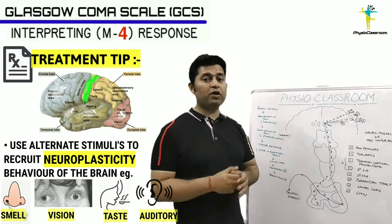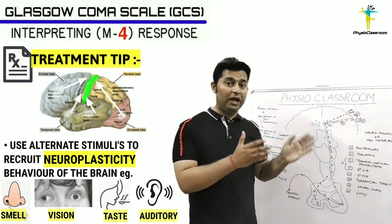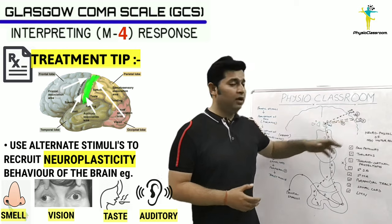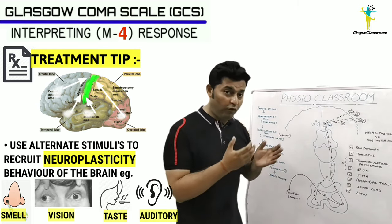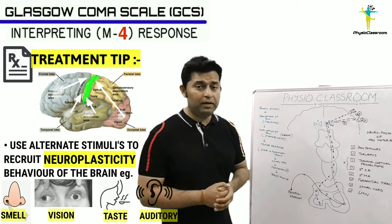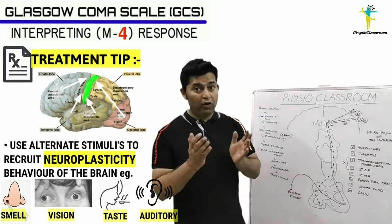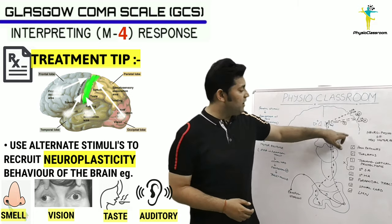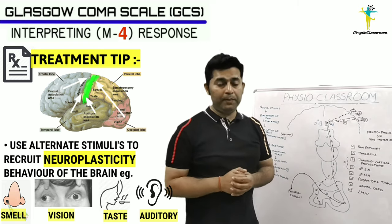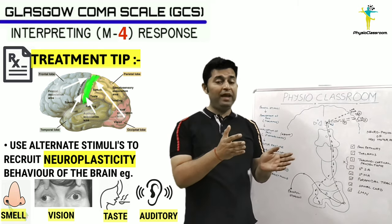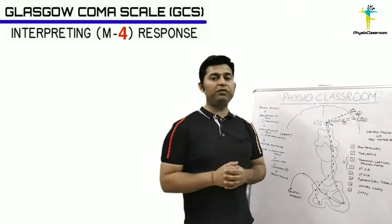We can utilize alternate sensory stimuli — such as smell, vision, taste, and auditory signals — to activate the parietal sensory cortex, because this information reaches through alternate pathways and can recruit the neuroplasticity behavior of the brain. For example, visual stimulation activates the occipital cortex and the interconnections between the occipital and parietal lobes, helping strengthen the brain's ability to feel for an object that it sees.